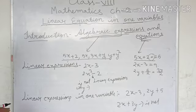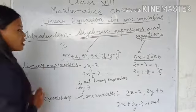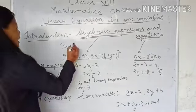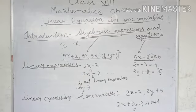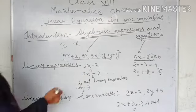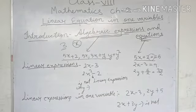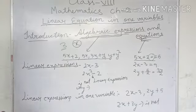So what is algebra? Algebra means there will be one known and one unknown figure. Suppose 3 — everybody knows 3. But if I say x, I don't know what is the value of x. So x is called an unknown value. This is called an algebraic expression — there will be one constant and one unknown value.